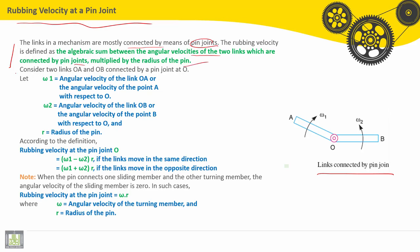Consider two links OA and OB connected by pin joint at O. Let ω1 or omega 1 be the angular velocity of the link OA, or the angular velocity of point A with respect to O. And ω2 or omega 2 is the angular velocity of the link OB, or the angular velocity of point B with respect to O. And R is the radius of the pin.